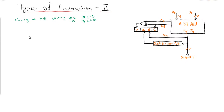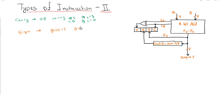Next is the sign bit. The sign flag is used whenever we are dealing with sign-magnitude or signed numbers. The most significant bit (MSB) represents the sign. For a positive number, the sign bit is set to 0, and for a negative number it is set to 1.